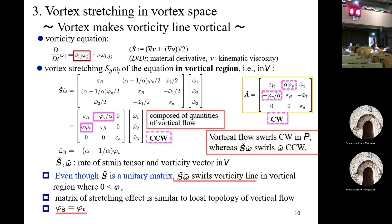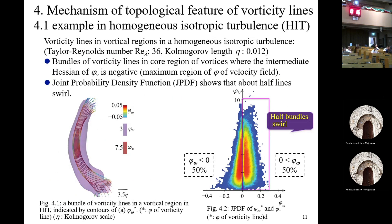It is also interesting that the swirling feature of the vortical tensile and the swirling feature of vortex stretching have the same value of sorority. However, the vortical tensile rotates the flow clockwise, while vortex stretching swirls the vorticity vector counterclockwise in the vortical region.